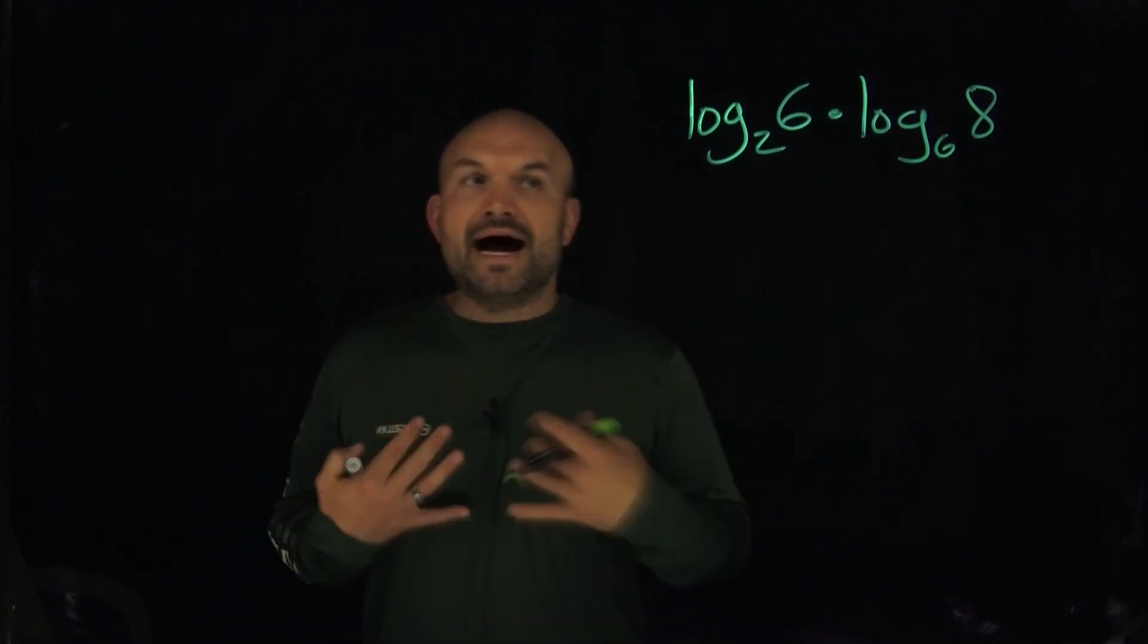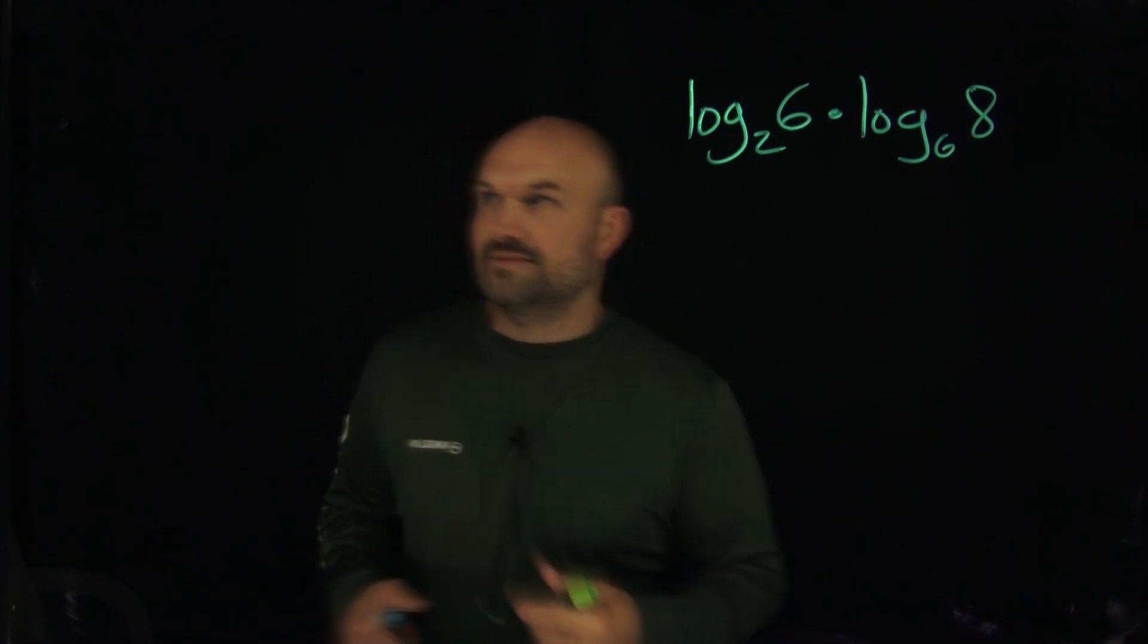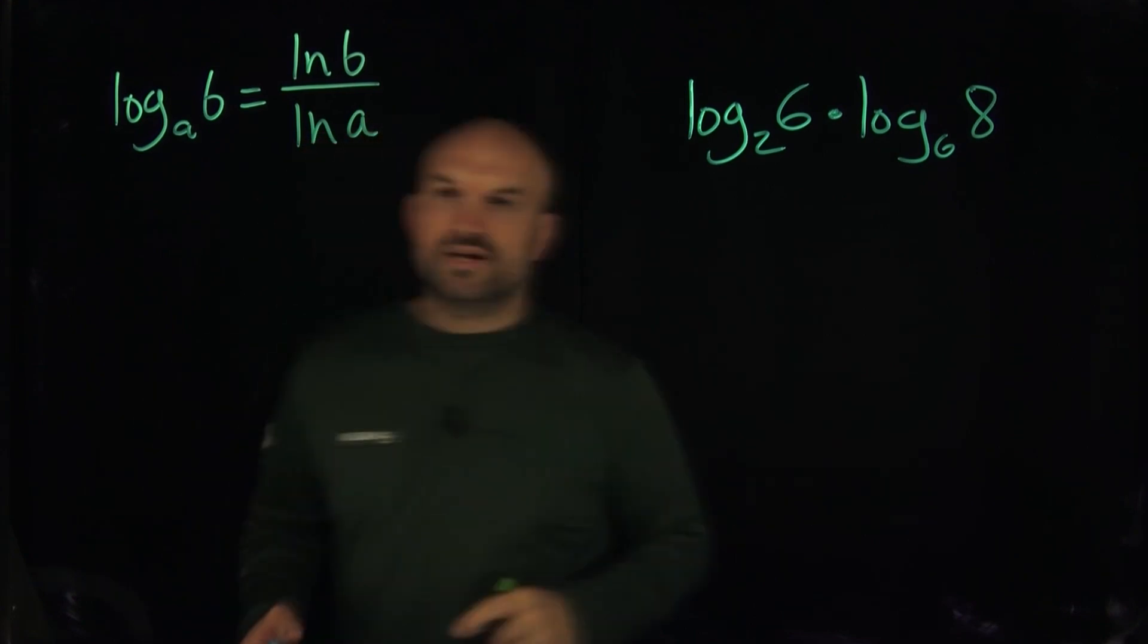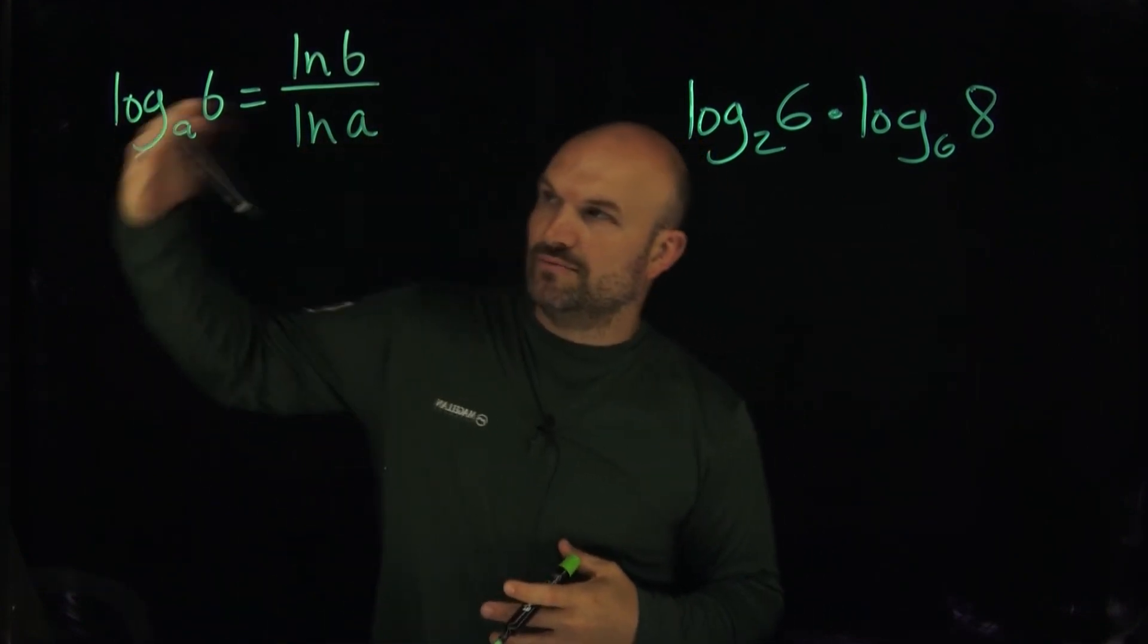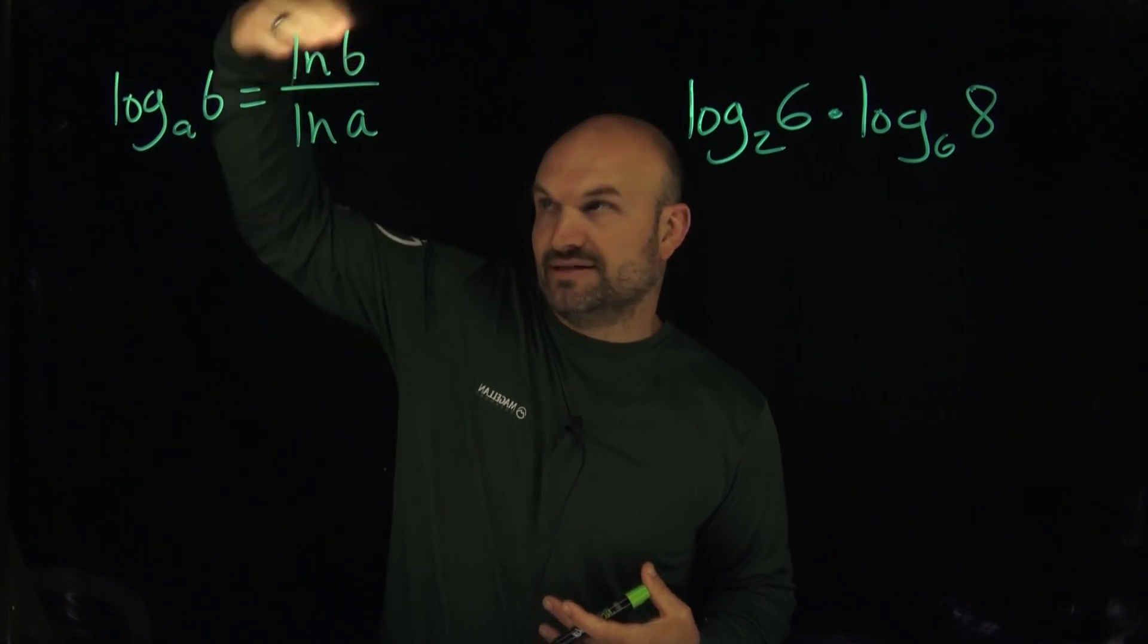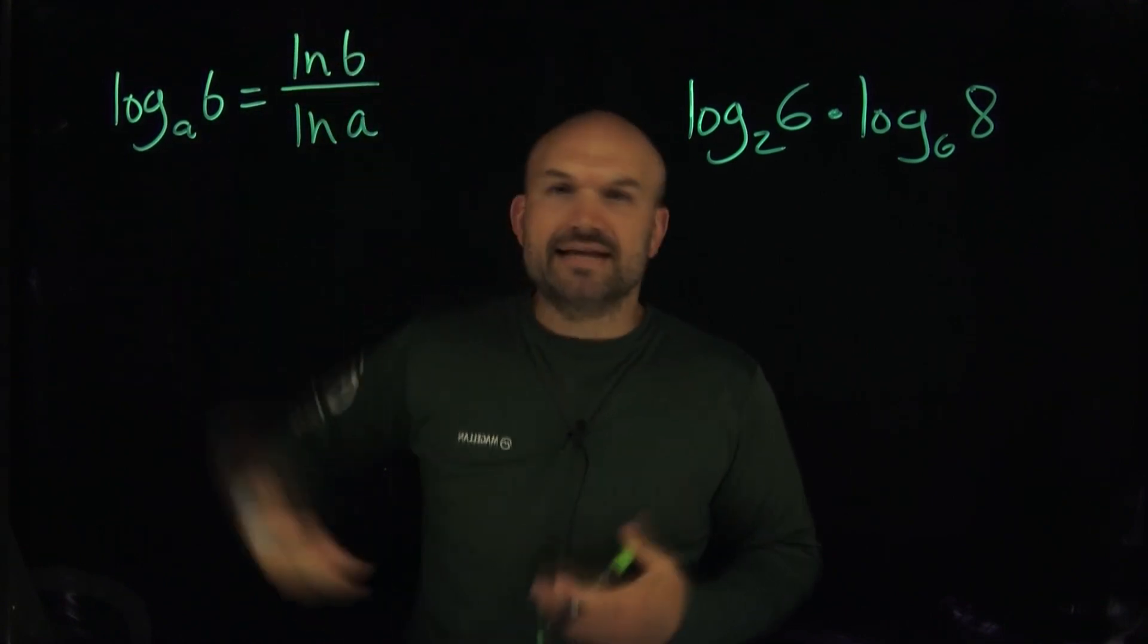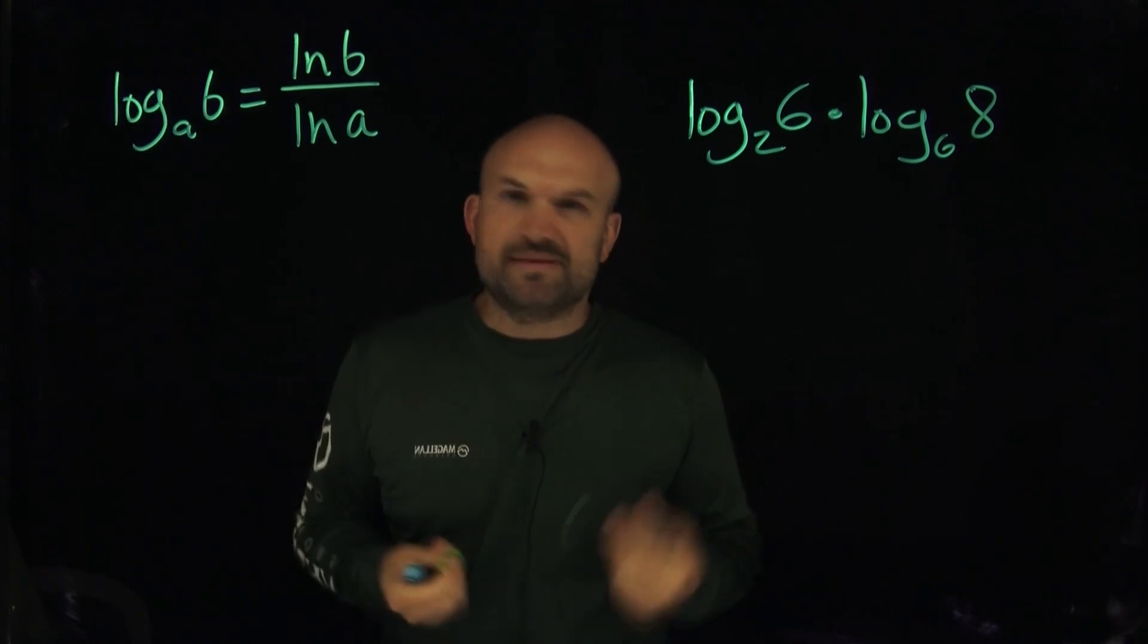So we recognize there's really not much I can do here, but one thing I can do is use the change of base formula. Now, when I personally like to use the change of base formula, I always like to use logarithms. And again, just a quick reminder, the change of base formula just looks like this. So basically what I'm doing is I have a logarithm with the base A of B. I can just rewrite this as the logarithm of the argument, in this case B, divided by the logarithm of the argument from the original base.